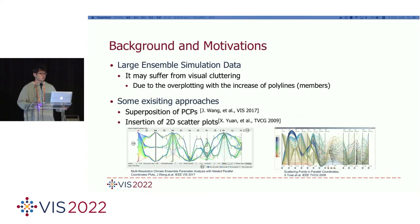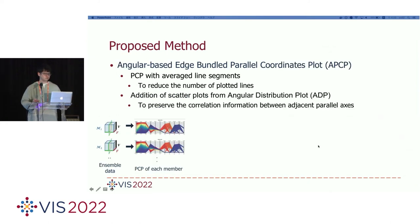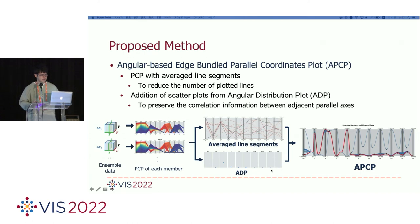However, when applying PCP onto large ensemble simulation data, it may suffer from visual cluttering due to overplotting with the increasing number of polylines or members. There are already some existing approaches for minimizing this problem, and our work was inspired by one of them. To address this problem, we propose the Angular-based edge-bundled Parallel Coordinates Plot, APCP. It uses an average line segment that summarizes the polyline for each member, and scatter plots from angular distribution plots are added to provide correlation information between adjacent parallel axes.